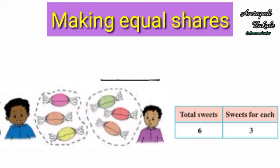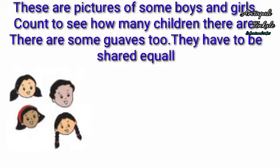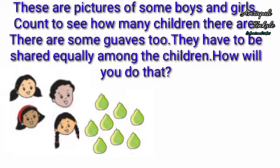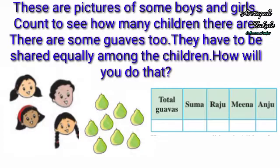These are pictures of some boys and girls. Count to see how many children there are. There are some guavas too. They have to be shared equally among the children. How will you do that? Here are the children's names: Suma, Raju, Mina, and Anju.